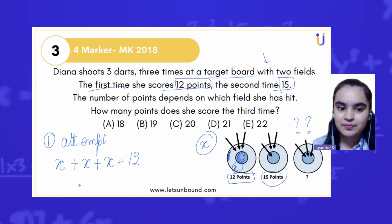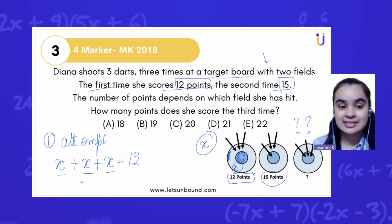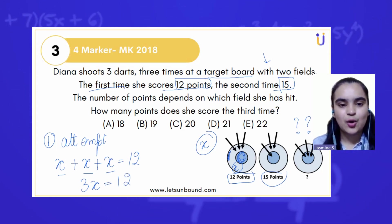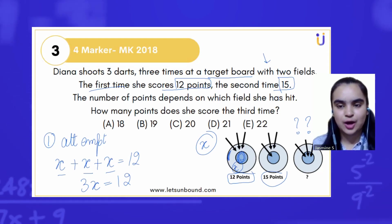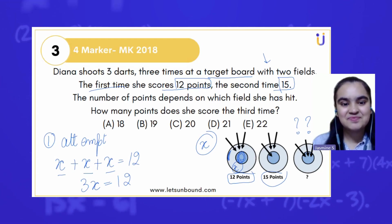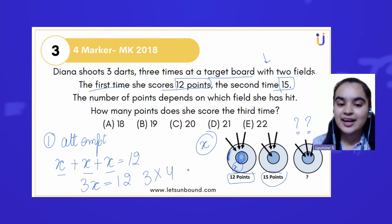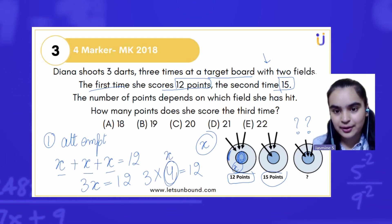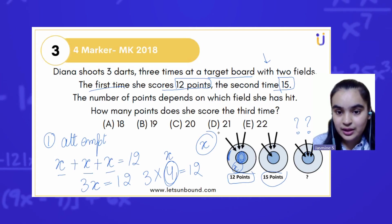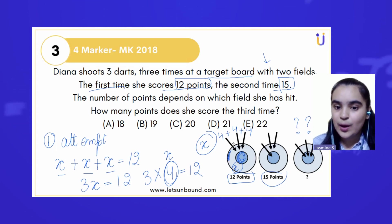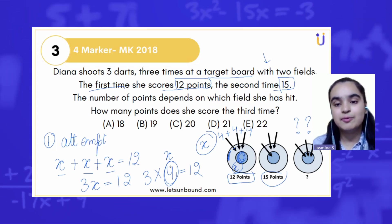What should we multiply by 3 to get 12? When does 12 come in the table of 3? 3 times 4 is 12. That means the value of x is 4. So 4 plus 4 plus 4 is 12 — whatever point she gets for the outer field is 4 points.